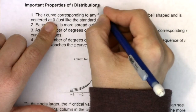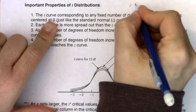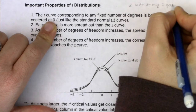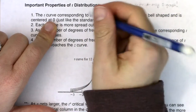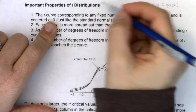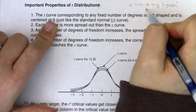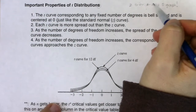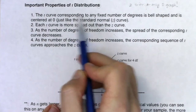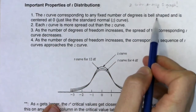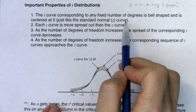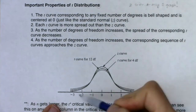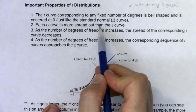Notice the t-distributions are plural. When I talk about the z-distribution, there's only one graph. But for the t-distributions, there are infinite numbers of them. The t-distribution corresponding to any fixed number of degrees of freedom is bell-shaped and centered at zero, just like the standard normal curve. So t-curves, at least shape-wise, look a lot like z-curves — they still look like a bell curve.